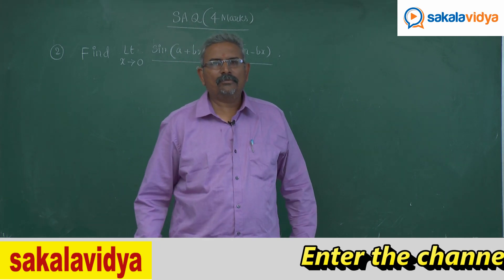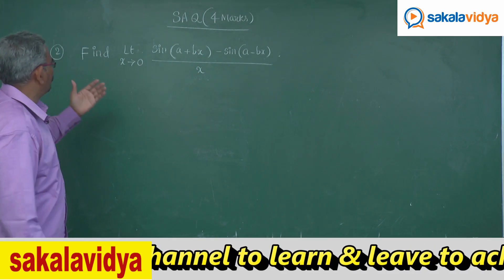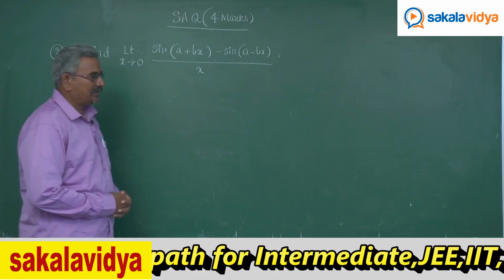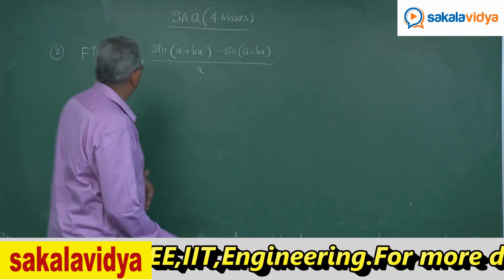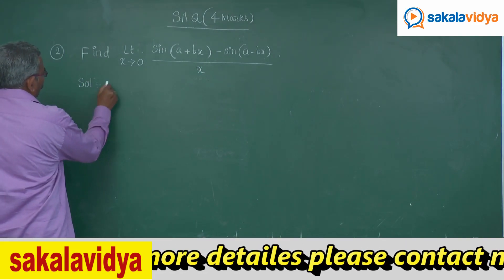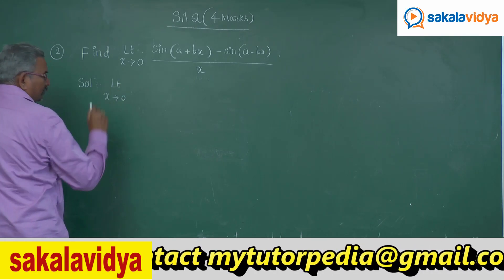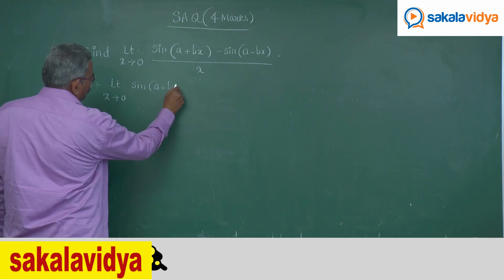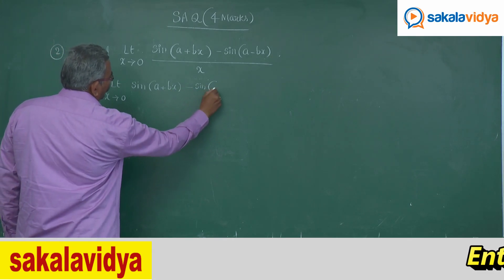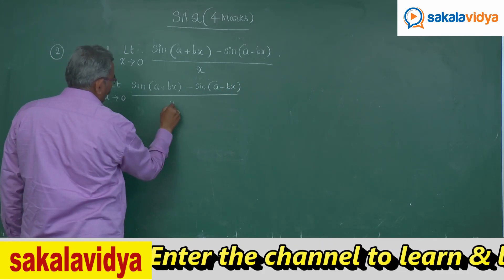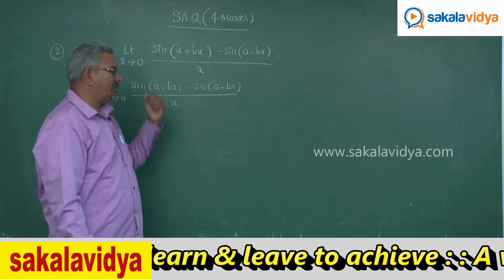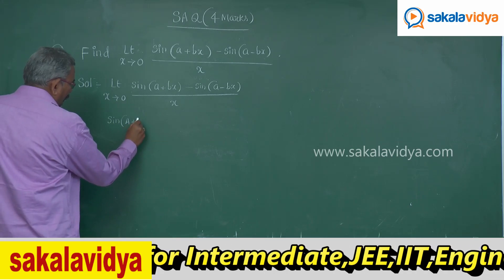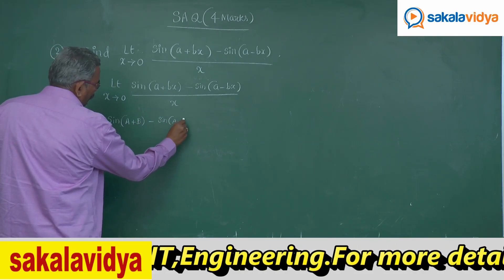Today let us solve one more problem. Find limit x tends to 0 of sine of (a plus bx) minus sine of (a minus bx), divided by 2. Let us simplify the numerator using the formula: sine of (a plus b) minus sine of (a minus b) equals 2 cos a sine b.